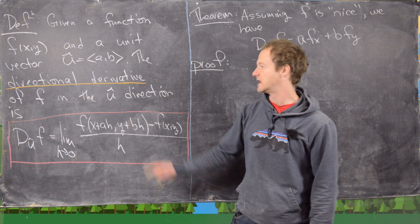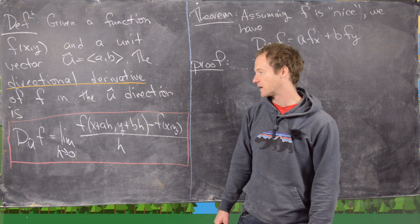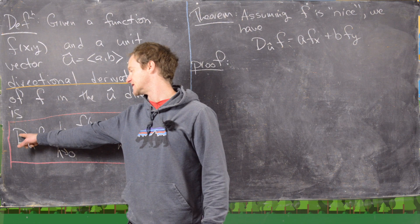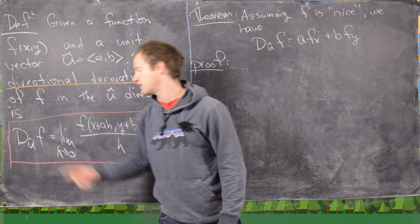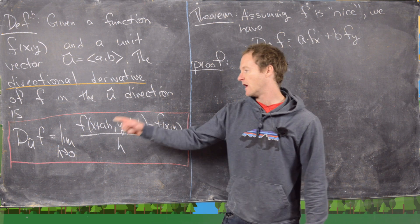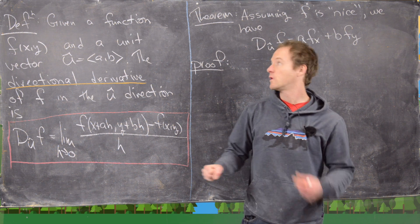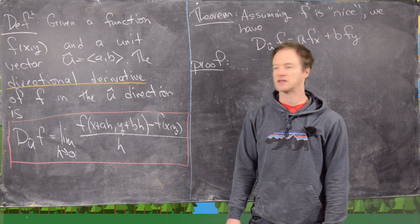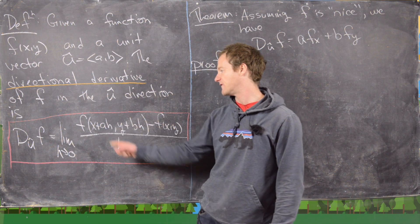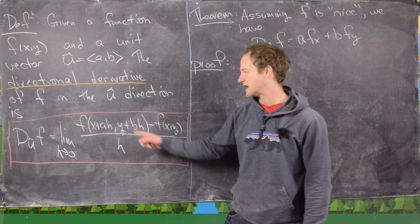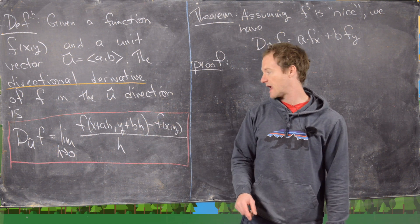The directional derivative of f in the u direction — that's what we're defining — is given by the following. The notation is D with a subscript u, meaning derivative in the u direction, of f. We define it as this difference quotient limit: the limit as h goes to zero of f evaluated at x plus ah, y plus bh, minus the function itself, over h.